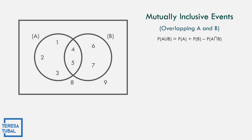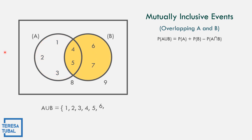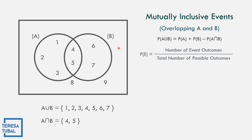So let us answer this one. The A union B: in event A, that is 1, 2, 3, 4, and 5. While event B, we have 4, 5, 6, and 7. The A intersection B is the overlapping of event A and event B, so that is 4 and 5. Using the formula to get the mutually inclusive events of this Venn diagram: probability of an event equals number of event outcomes over total number of possible outcomes.